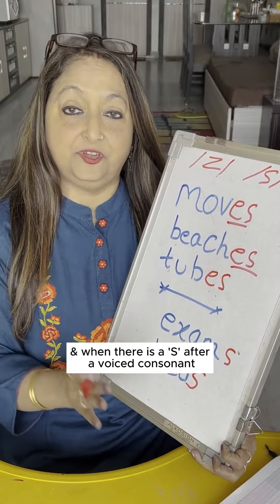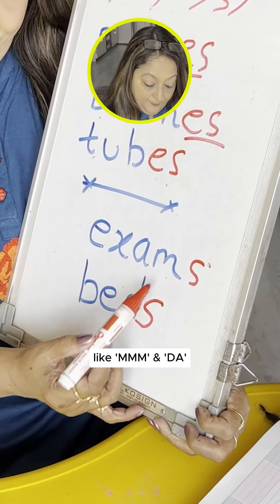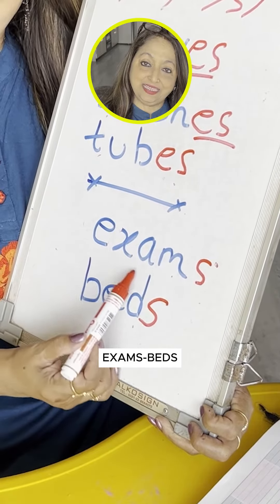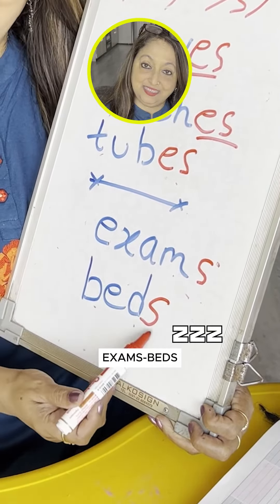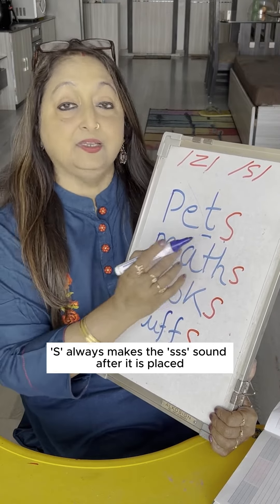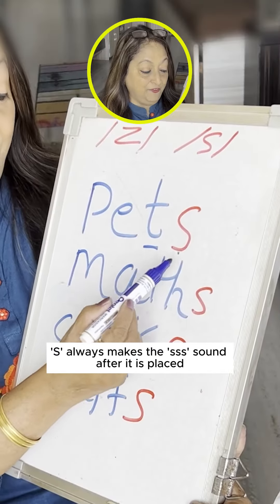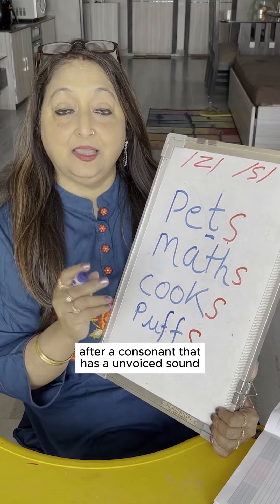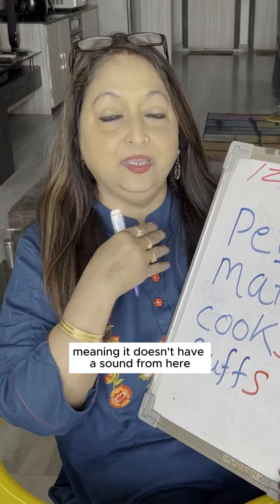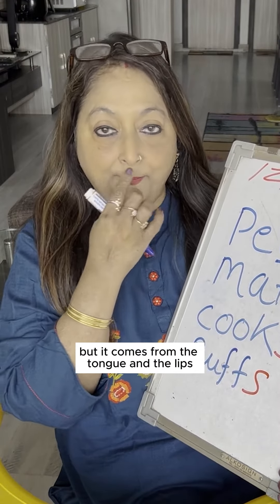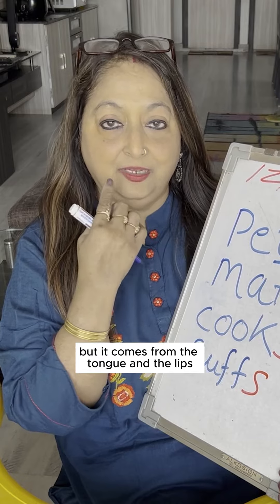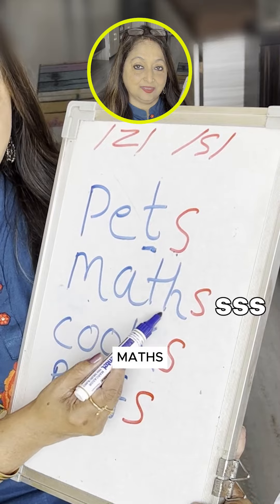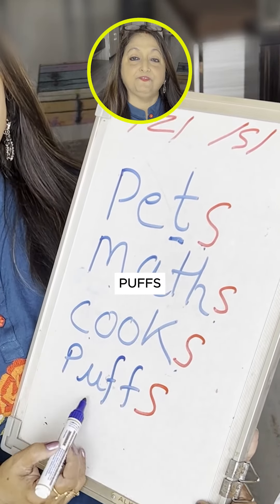S makes the /z/ sound after a voiced consonant as well — for example: exams, beds. S always makes the /s/ sound after an unvoiced consonant, meaning a sound that doesn't come from the vocal cords but from the tongue, lips, and air — for example: pets, mats, cooks, puffs.